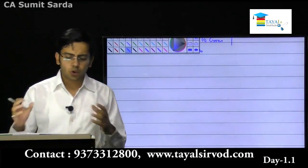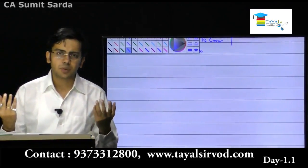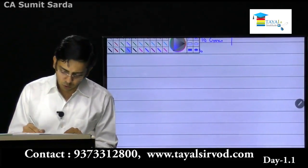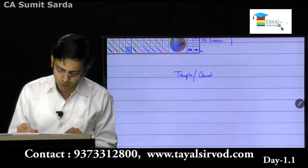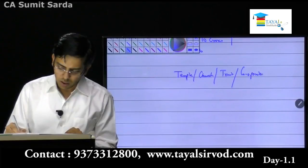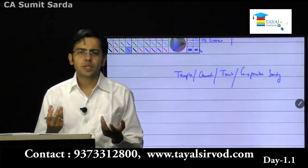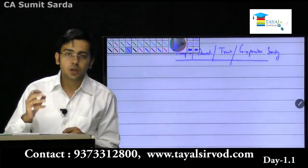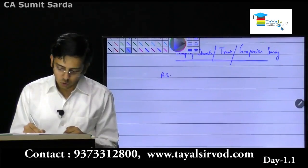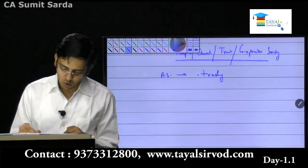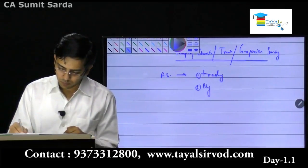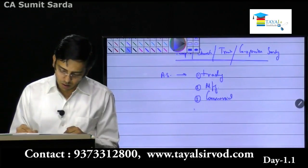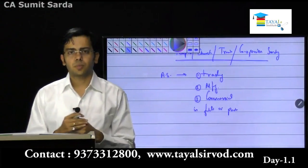Are we going to apply accounting standards to each Tom, Dick and Harry we find? If I go to any temple, church, trust, or cooperative society, am I going to apply accounting standards to them as well? No. The basic definition of who is required to follow accounting standards is those who are engaged in trading, manufacturing, or commercial activity — in full or in part.